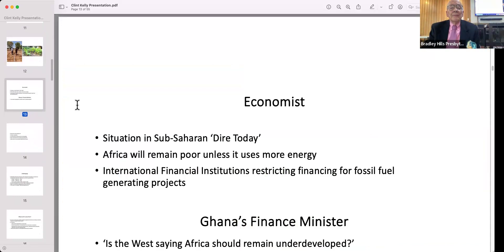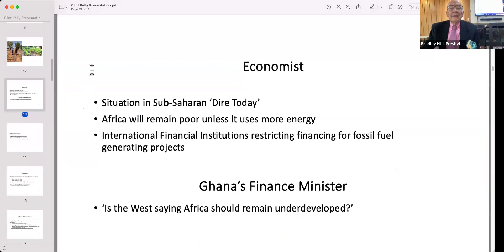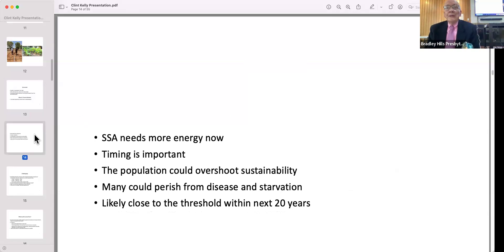The Economist says the situation in sub-Saharan Africa is dire. They need more energy. International financial institutions are restricting financing for fossil fuel generating projects, but they've got lots of coal and natural gas. Ghana's finance minister responded: 'Is the west saying Africa should remain undeveloped?' Sub-Saharan Africa needs energy now. It is likely if they don't get energy pretty quickly that the population is going to overshoot sustainability and a lot of people are going to die as a consequence.